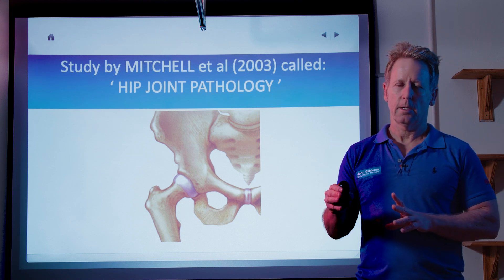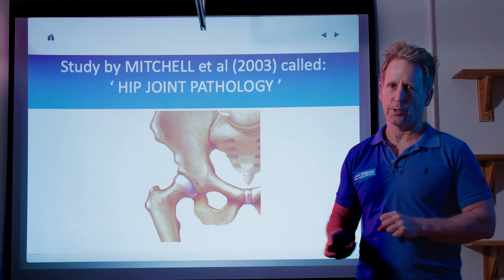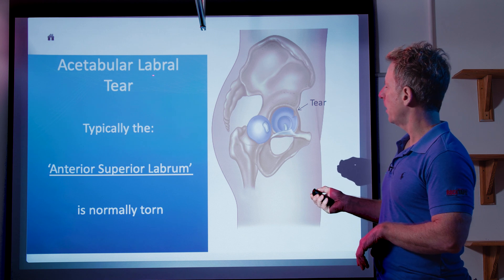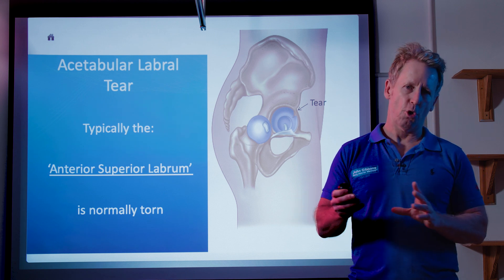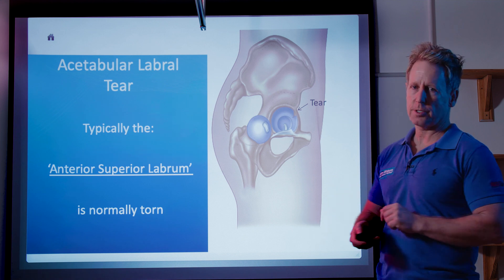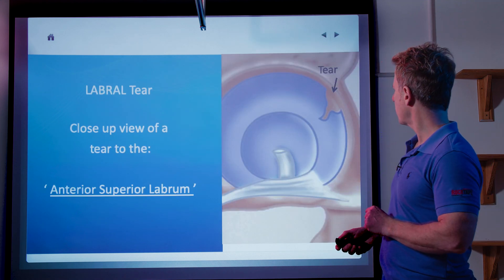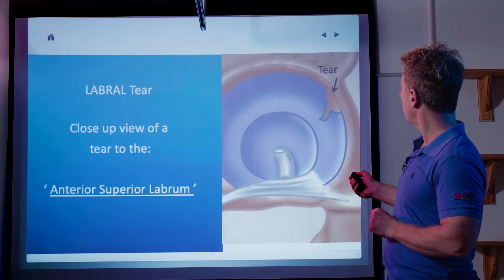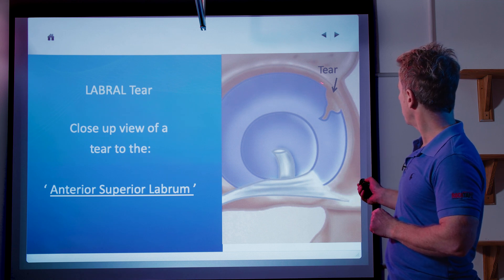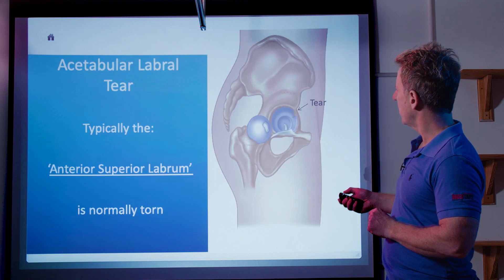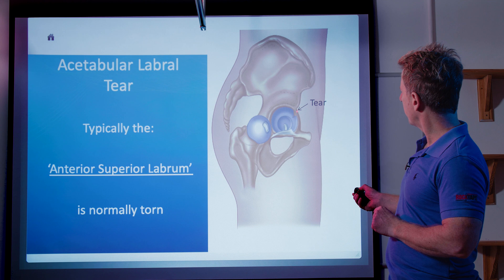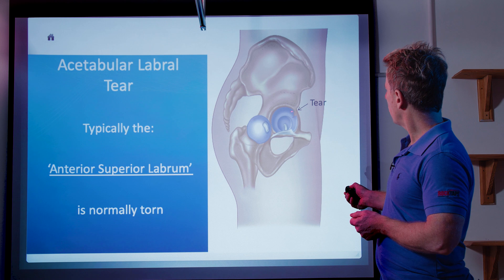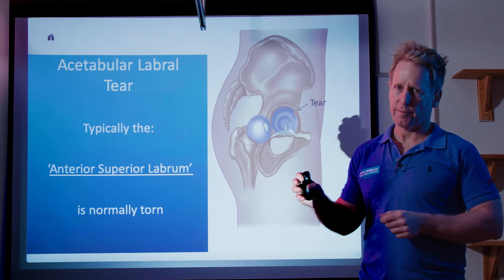This was a study done by Mitchell et al in 2003 called hip joint pathology. They performed 25 arthroscopies of the hip joint, and most of them had an issue directly with the acetabular labrum. They found the majority had a tear. This is a close-up view — the labrum of the hip joint, which tends to tear at the anterior superior part of the labrum around the front. If you've got a tear within the hip joint, then potentially that could cause symptoms.